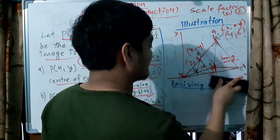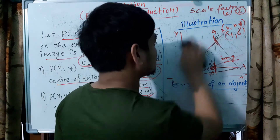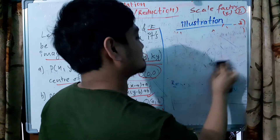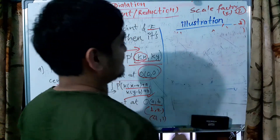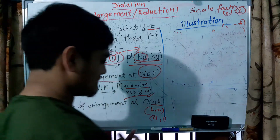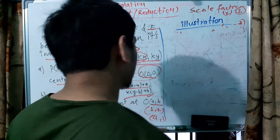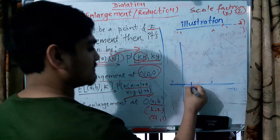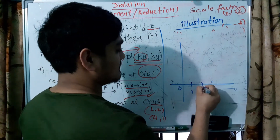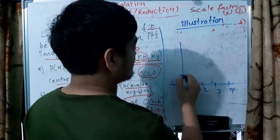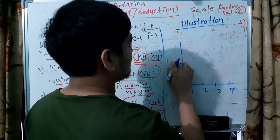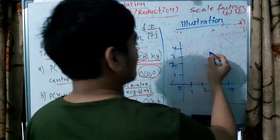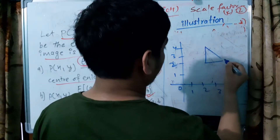It's just the origin. Now we will have the coordinates: 1, 0, 1, 2, 3, 4. This is the image of the triangle — this is the triangle, enlarged or reduced.